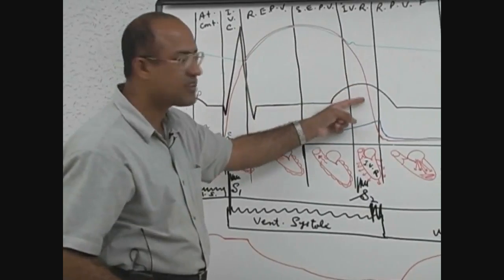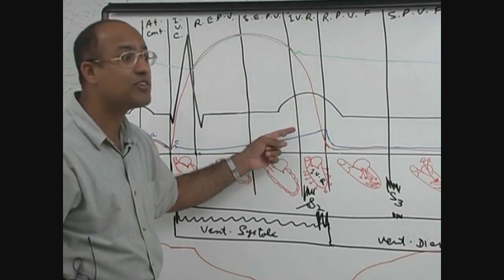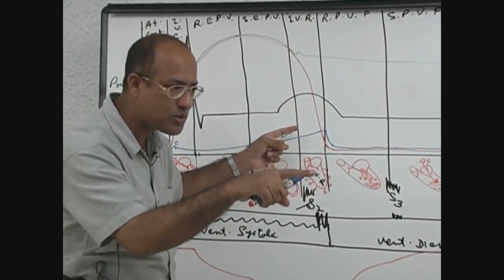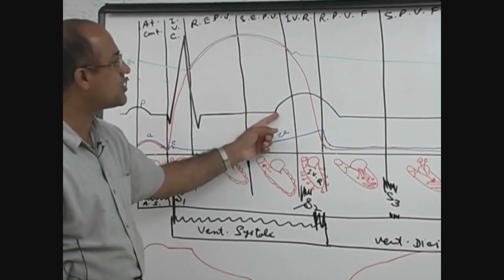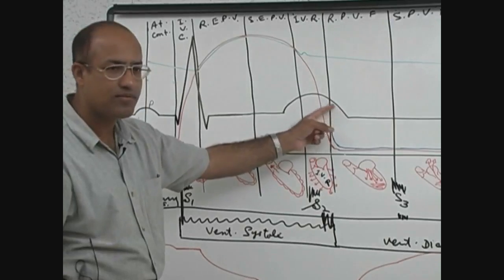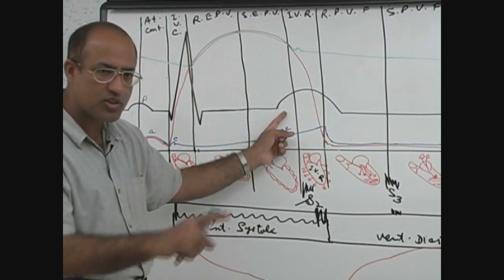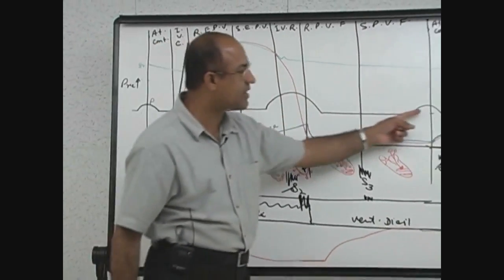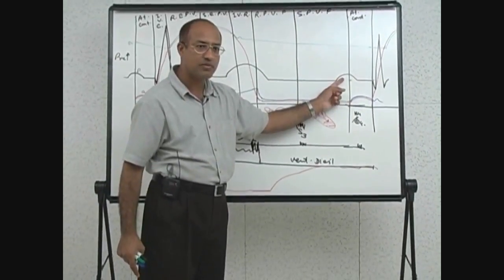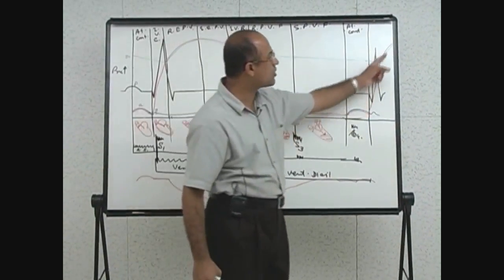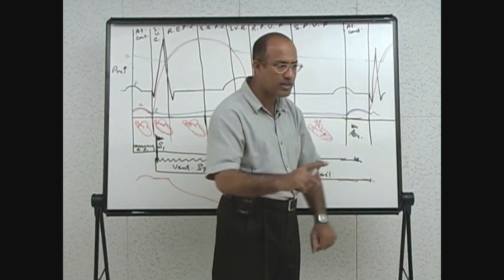When the ventricles start relaxing, ventricular repolarization must occur just before relaxation, which is represented by the T wave. Before the next cycle, the next P wave comes before the next atrial contraction, and the QRS complex comes just before the next ventricular contraction. This is the complete correlation of ECG electrical events with the mechanical cardiac cycle.